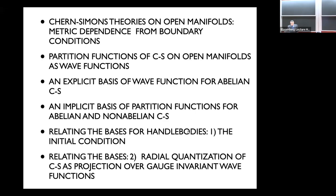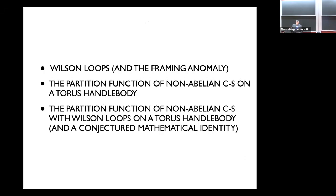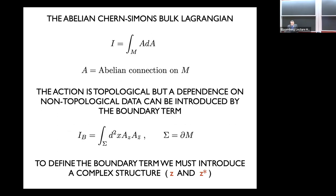I will do that for the partition function with no insertion and then talk about Wilson loops, finding a natural way in which a generalization of the framing anomaly appears. The whole story was supposed to be chapter zero of a longer story involving non-abelian Chern-Simons, but that was only completed for a torus handlebody, where we found an interesting identity which we could prove in the simplest case by explicit calculations, but which should be underpinned by a mathematical identity we don't yet know.